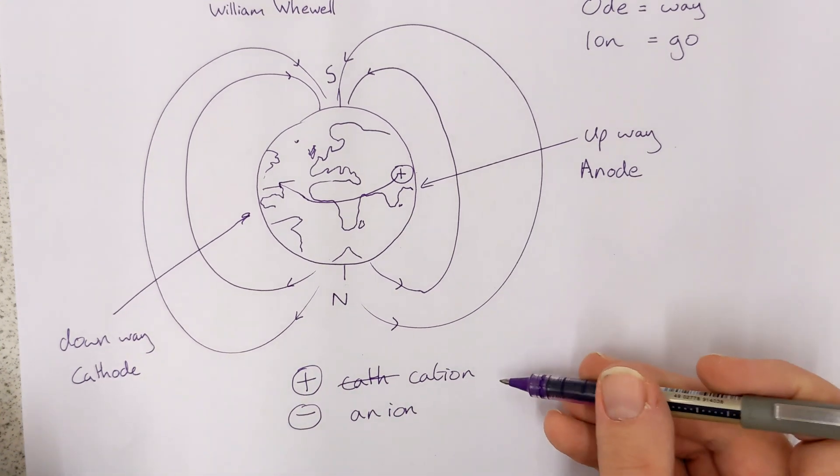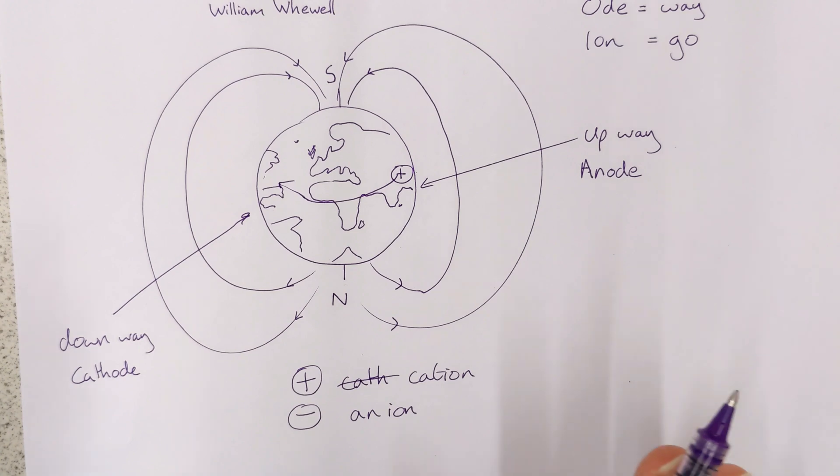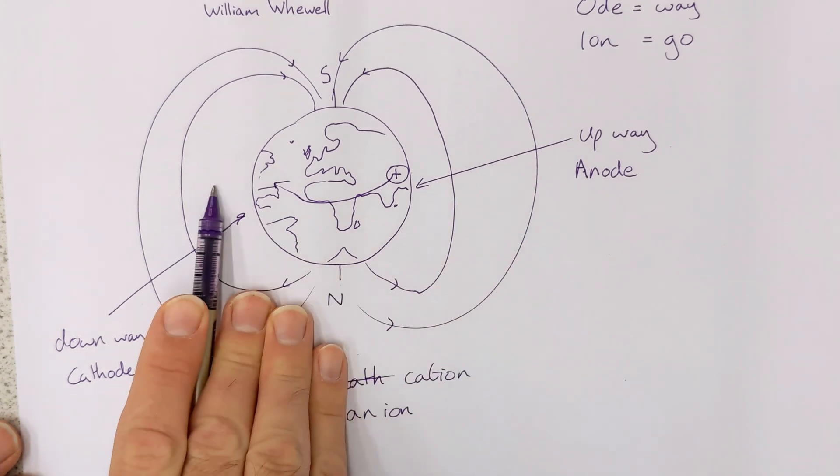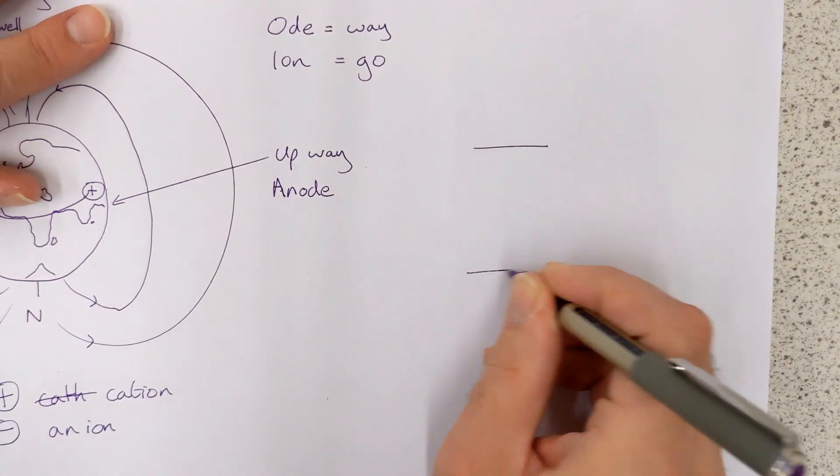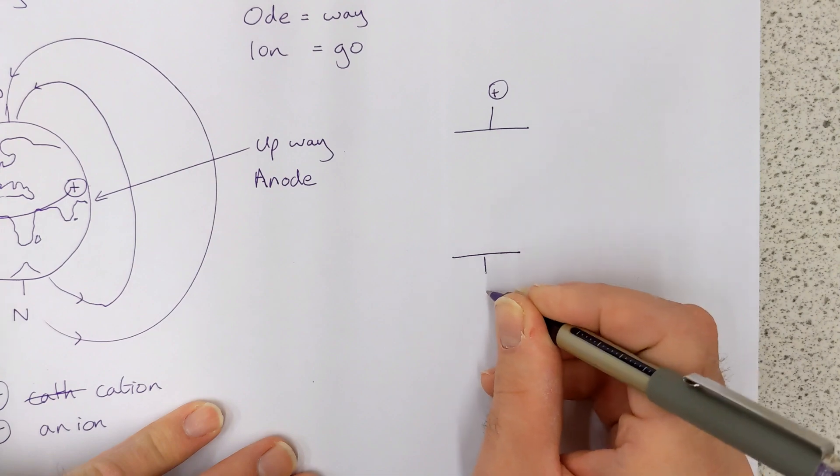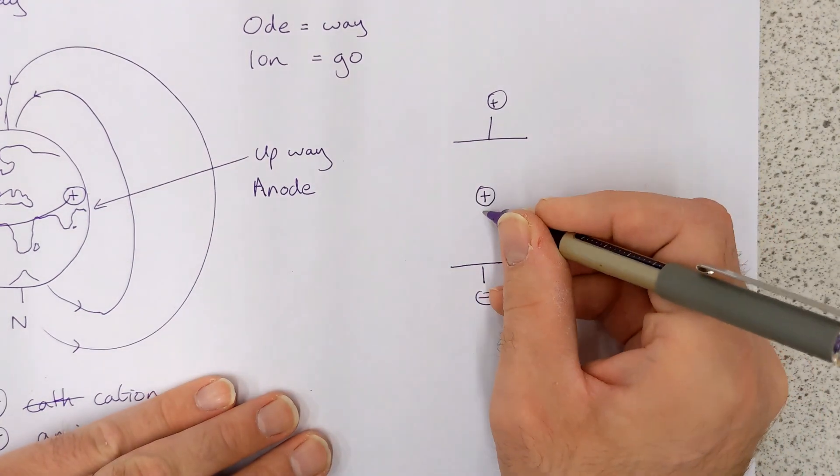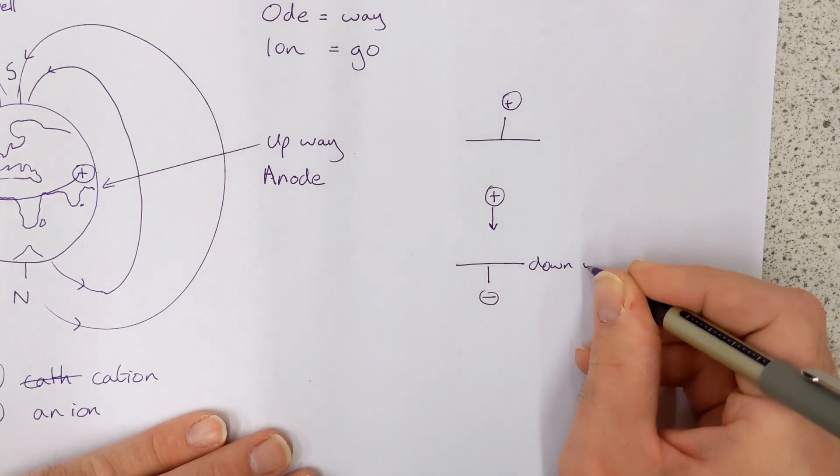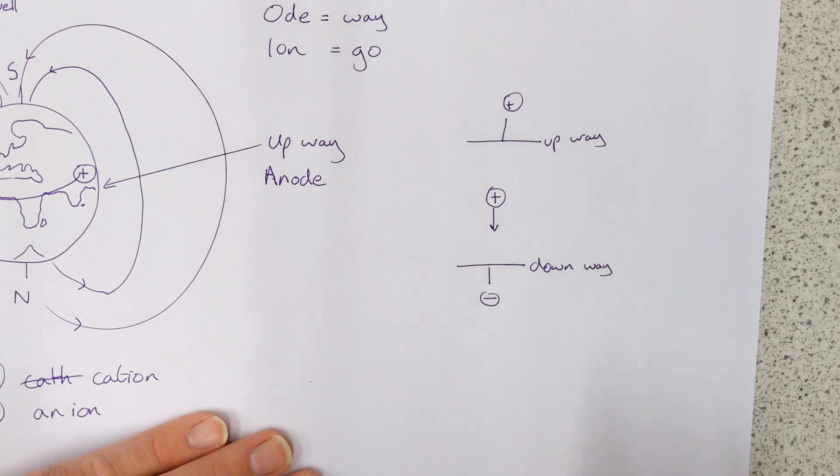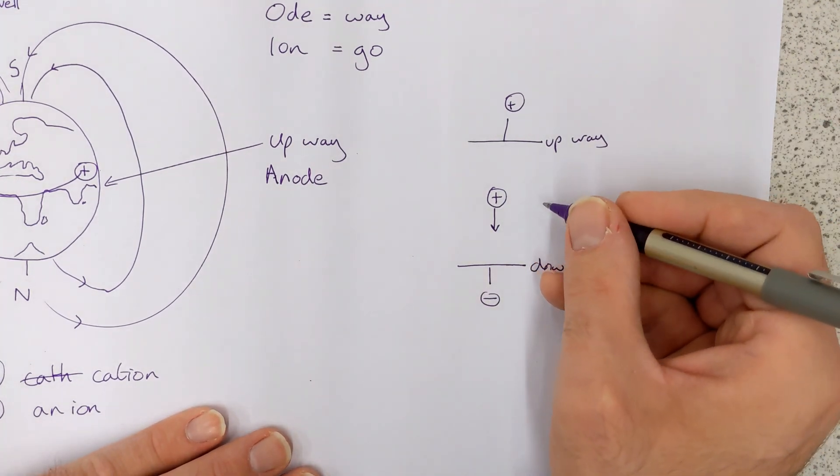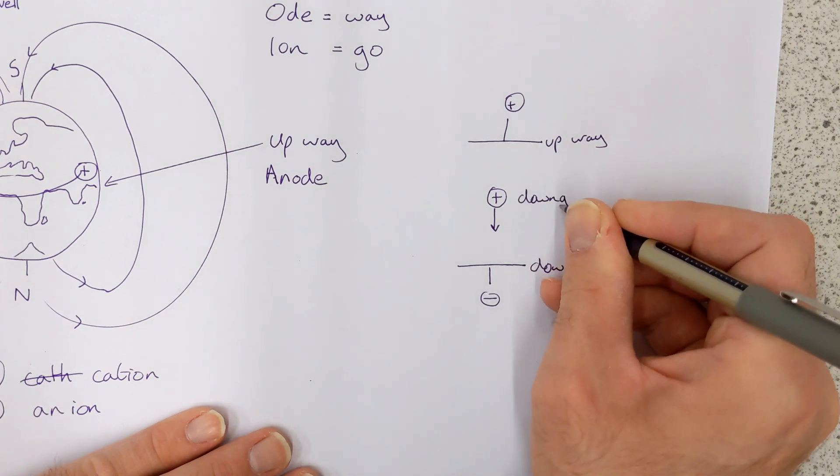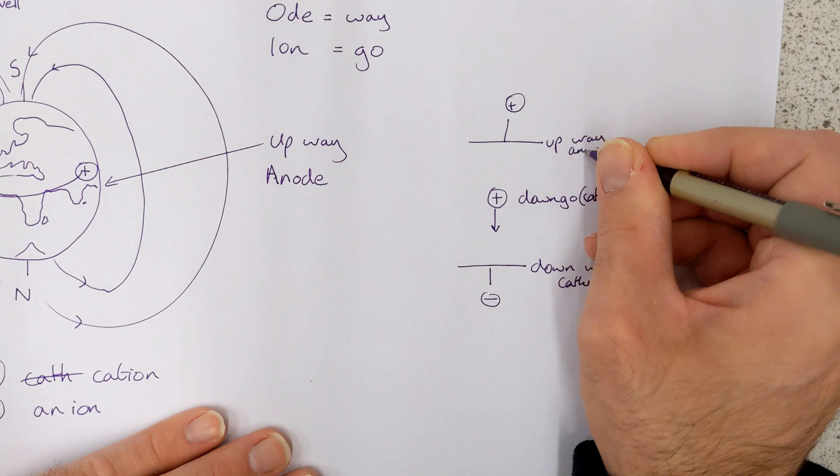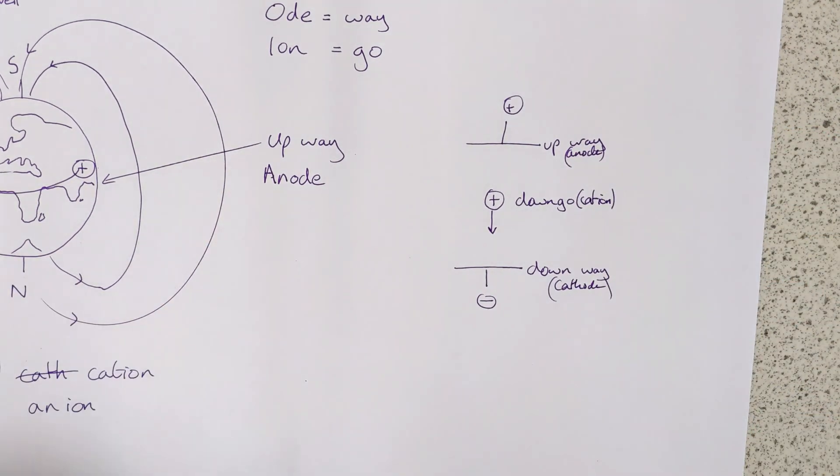It turns out that cations are always going to be positive and anions are always going to be negative. That is a fact. But cathodes and anodes are not necessarily positively charged and negatively charged. So we could set up a situation, for example, where we have two electrodes and let's have this one as positive and this one as negative. And in that case, a positive charge is indeed going to be going down or towards the down way. Remember that this over here, this is the down way, also known as the cathode. This is the up way. And so this positive charge is going to be a down go particle or a cation, a down go. So, cation, so this is going to be a cathode.